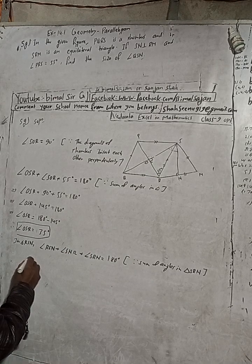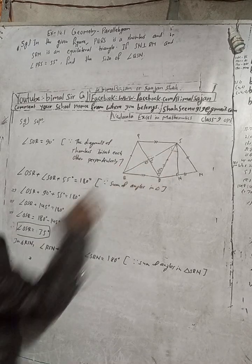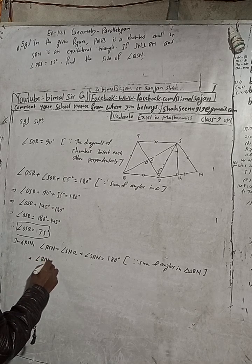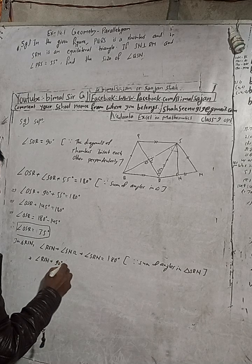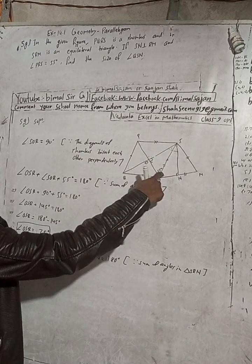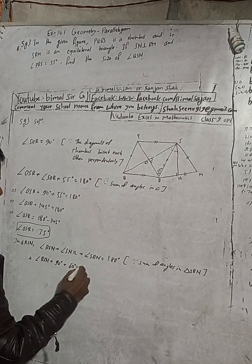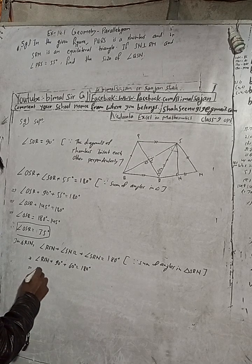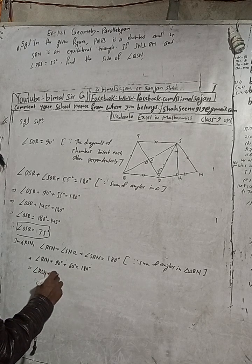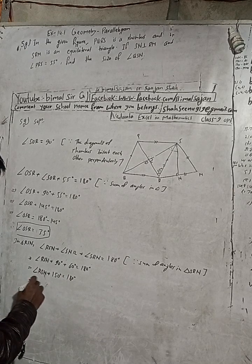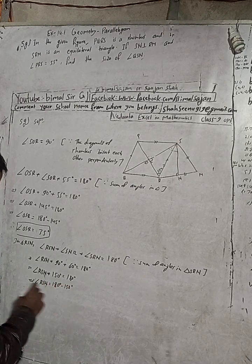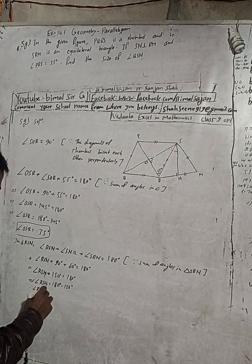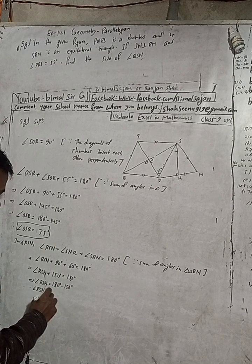Now put the values. Angle RSN plus angle SNR — which is 90 degrees — plus angle SRN — which is 60 degrees — equals 180 degrees. So angle RSN plus 150 degrees equals 180 degrees. Therefore angle RSN equals 180 minus 150, which is 30 degrees.